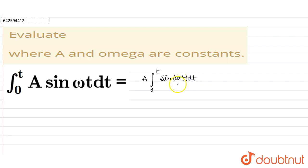Now here, ω is the constant, so when we integrate it, it will come in the denominator, and the integration of sine is minus cosine. So it will be -A cos(ωt)/ω.